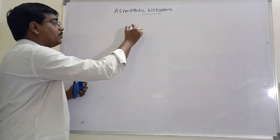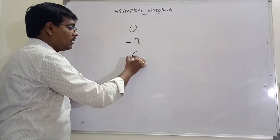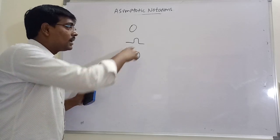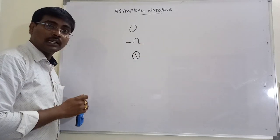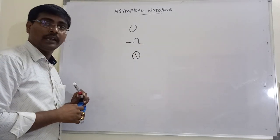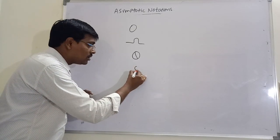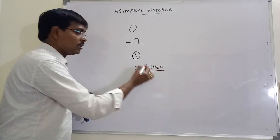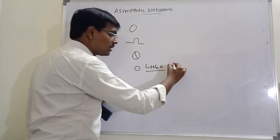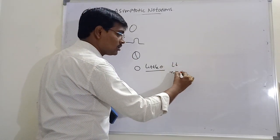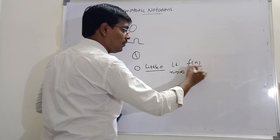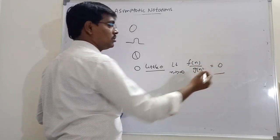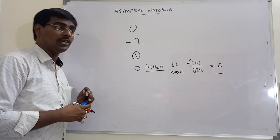Big O specifies upper bound, Omega specifies lower bound, and Theta specifies both lower bound and upper bound. Along with these, we have little o notation. Little o notation represents: the limit as n tends to infinity of f(n) / g(n) equals 0.